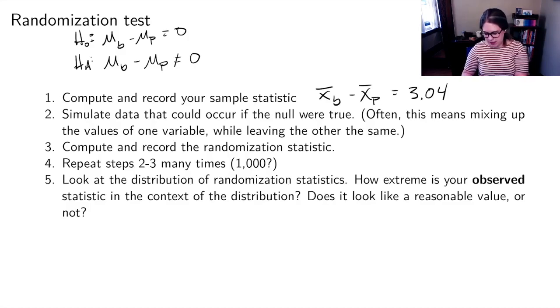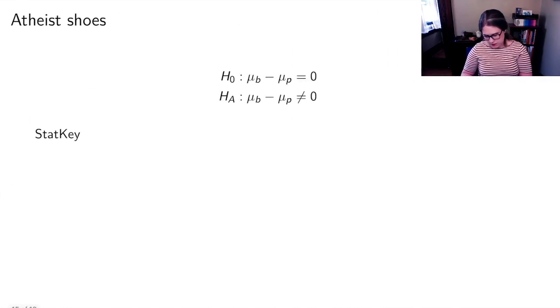We're going to repeat steps two and three a bunch of times, where a bunch of times means thousand or maybe more times. Then we're going to look at that distribution of randomization statistics, and we want to know how extreme is the observed statistic, the thing from step one, in the context of the distribution. Does it look like a reasonable value, or does it look like a not reasonable value to have observed under the null hypothesis?